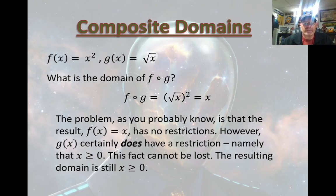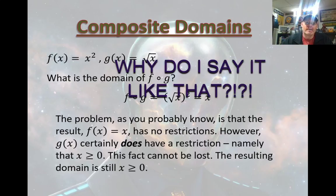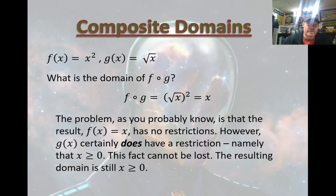All right, so if the embedded function, the one that goes into the other one, has a domain issue, you need to remember that. The resulting domain of f of g is x has to be greater than or equal to zero, just like it was for g(x). So keep that in mind.